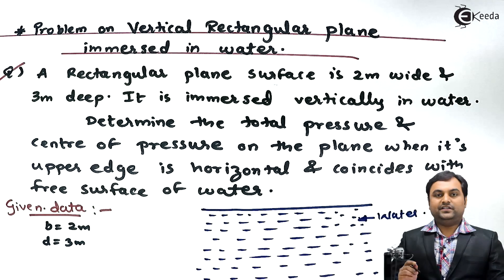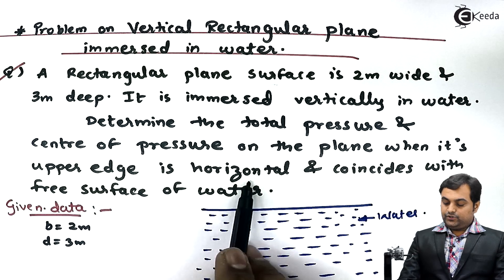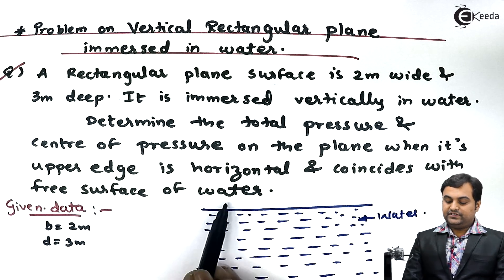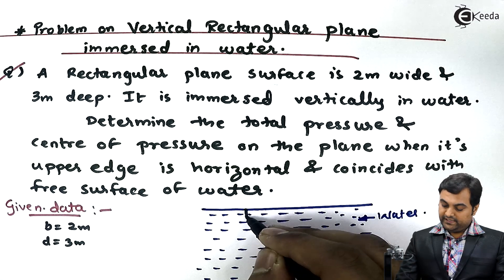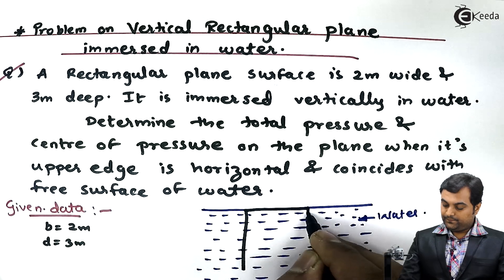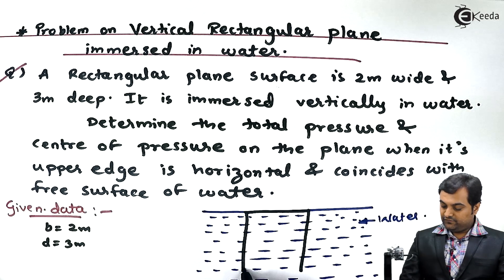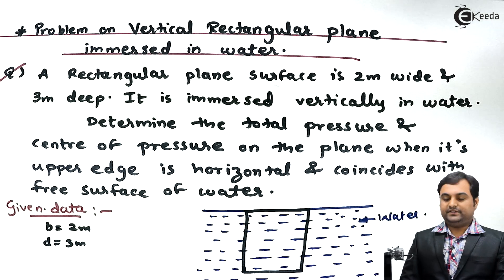Now it is immersed vertically in water and the condition is given in the end that the upper edge is horizontal and coincides with the free surface of water. So here the rectangular plane, it is coinciding with the free surface of water, so like this the rectangular plate is kept.